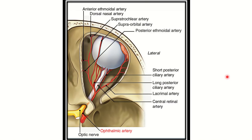In this picture, we can see the optic canal. Through the optic canal, the optic nerve passes and the ophthalmic artery passes. This point is very important — the optic canal passes only two structures: one is the nerve and another one is the artery.